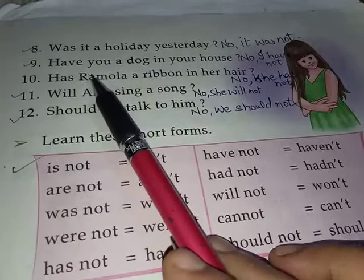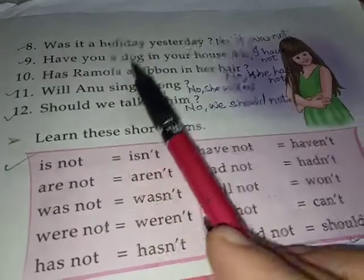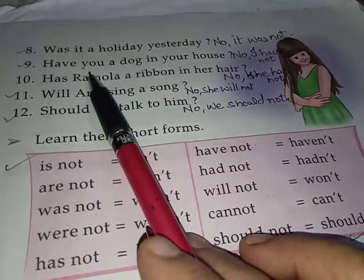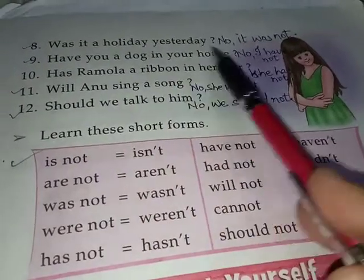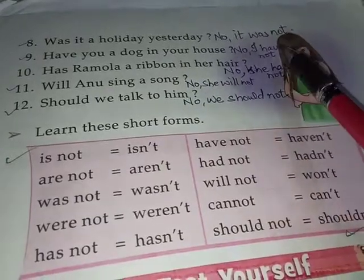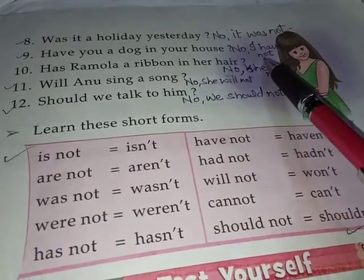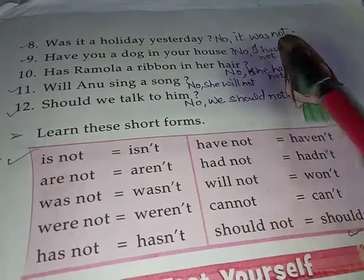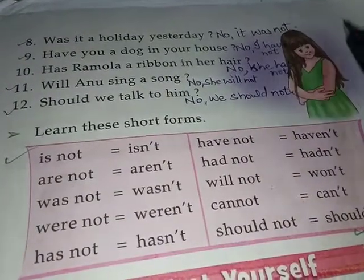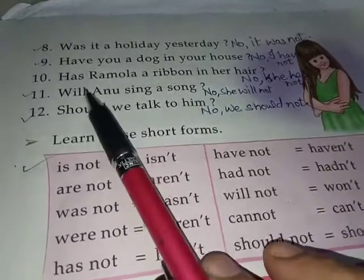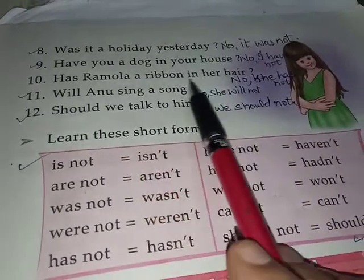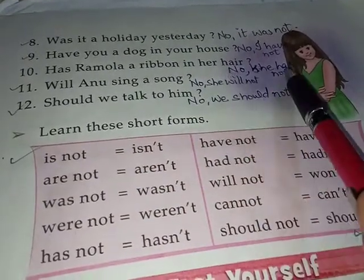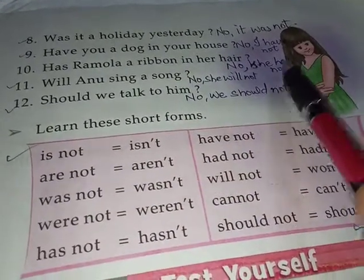Have you a dog in your house? Yahan pe dog ke liye nahi poocha ja raha, 'you' se poocha ja raha hai, so you will not use 'it.' 'You' ko 'I' mein change kardenge — No, I have not. Has Ramola a ribbon in her hair? No, she has not.